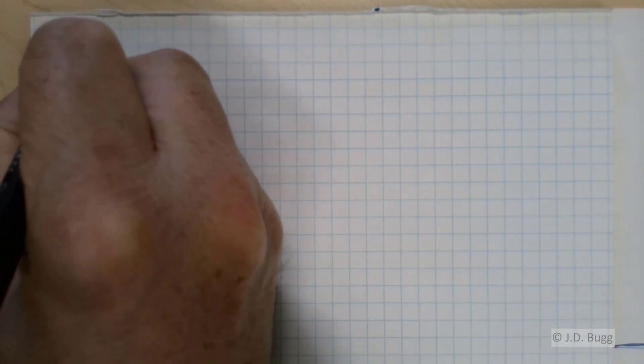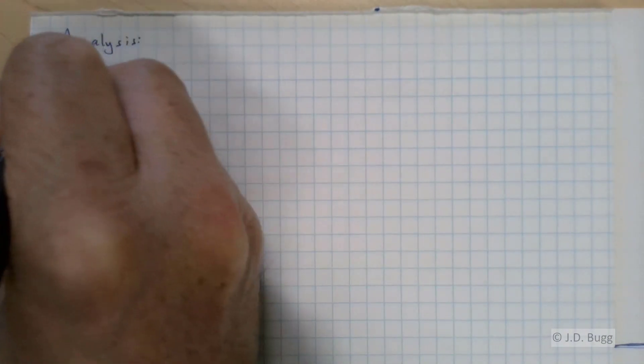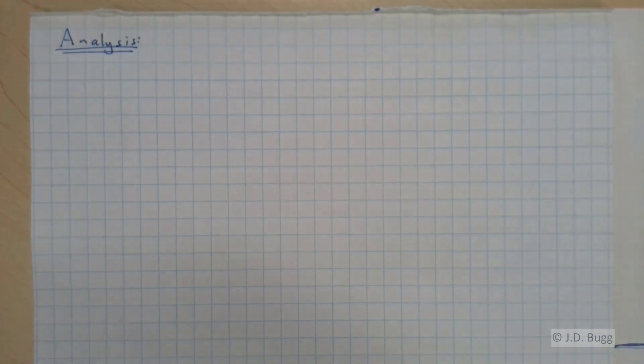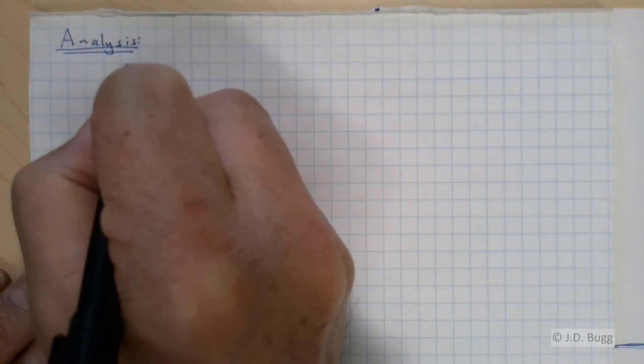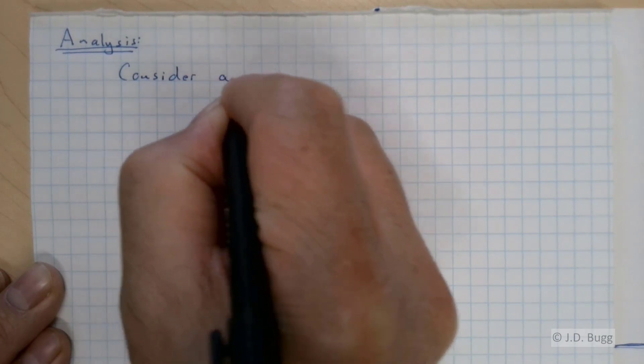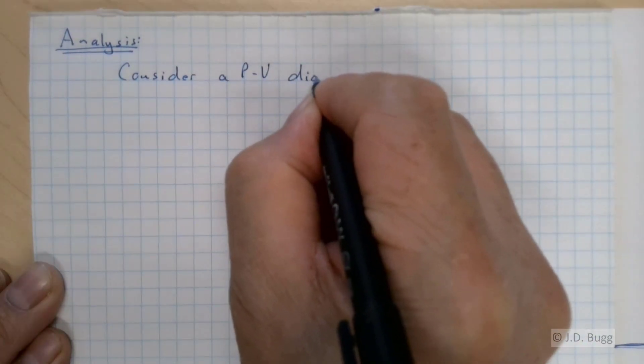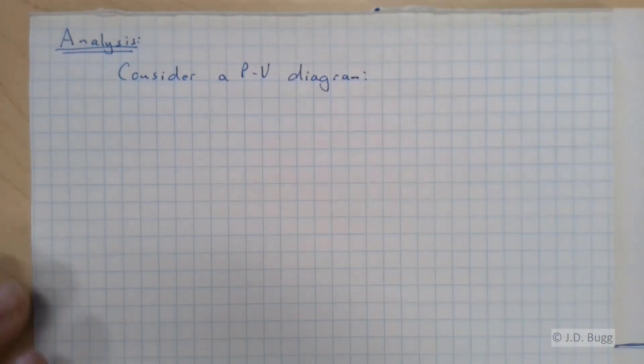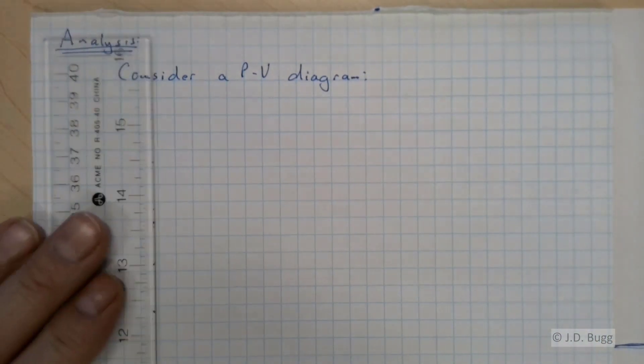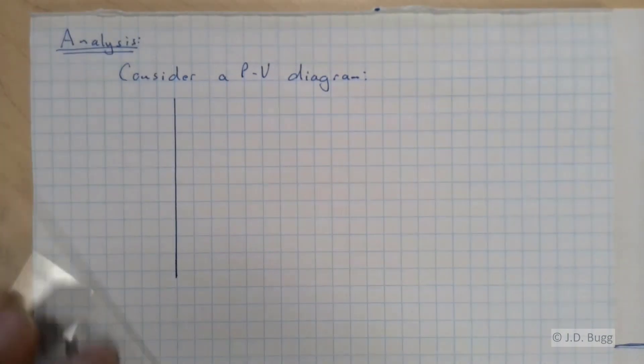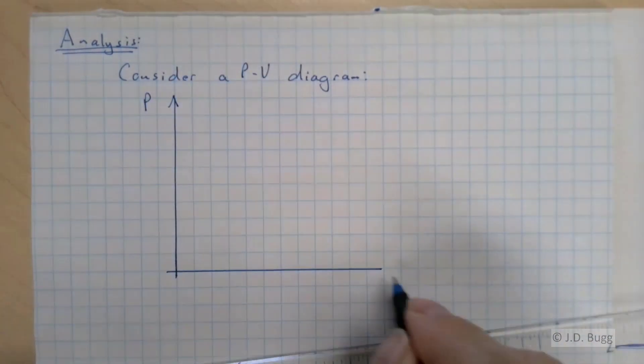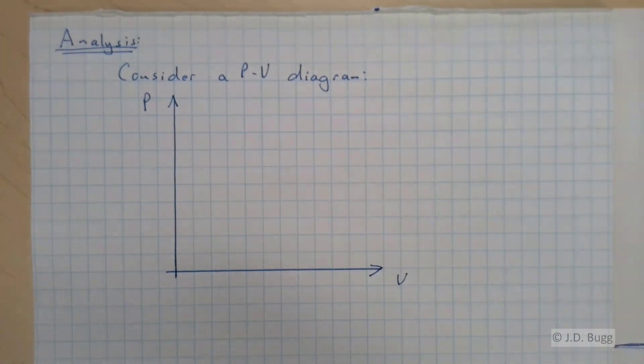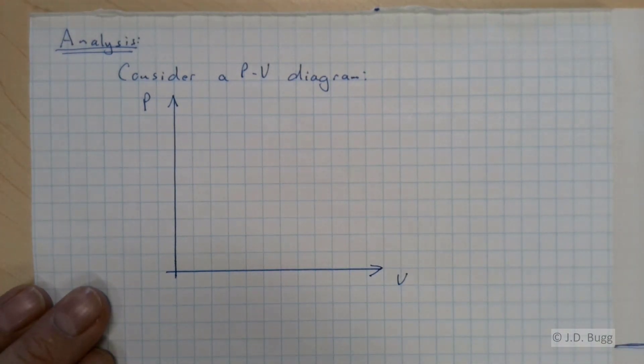So on to our analysis. Because we're doing work calculations here in a closed system, we're going to consider a PV diagram to help us with this problem. So PV diagram, we'll draw our PV axes here. And remember this is just a sketch. We're not trying to draw this accurately to scale.